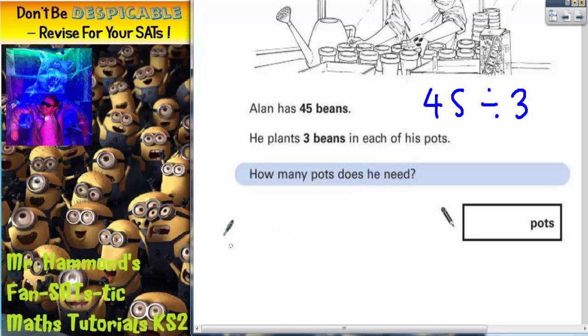We could do a quick bus shelter division. So 3s into 45. So 3s into 4 goes once with 1 left over. The 1 left over carries to the next column to make 15. So now we say 3s into 15 goes 5 times with none left over. Therefore, we finish the question. And the answer is up here at the top, which is 15. So we would need 15 pots.